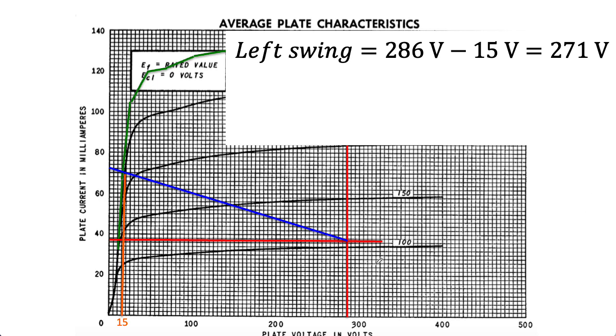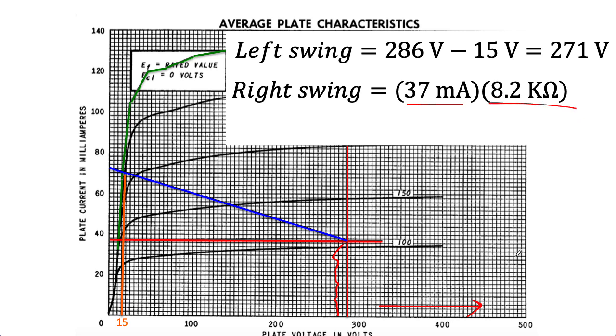Well, I could start from the DC bias point, travel 37 milliamps down, and if I did that, we would be traveling to the right by 37 milliamps times 8.2 kilo-ohms, which is 303 volts. So that would put us out here somewhere.